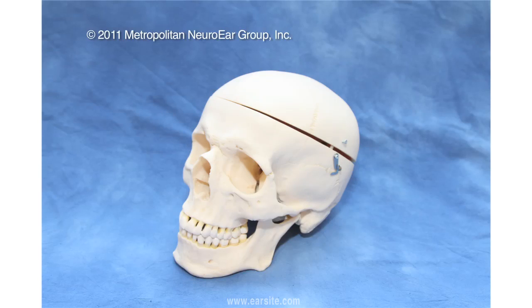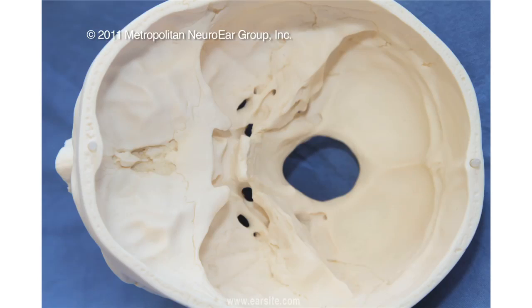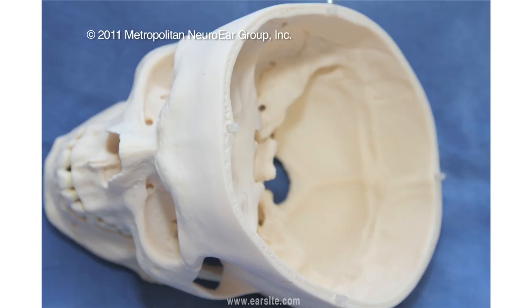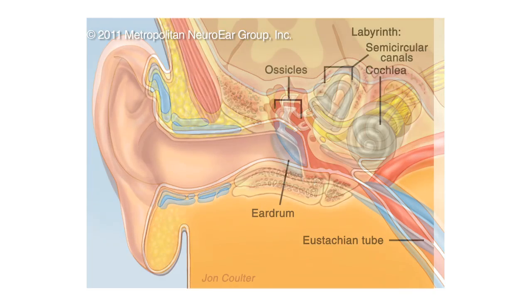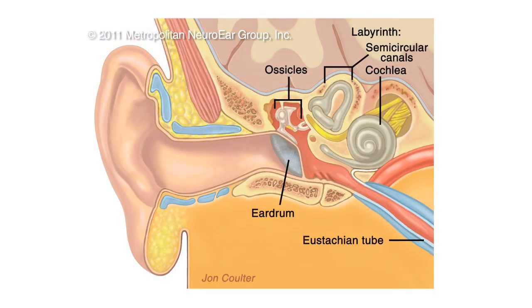you have to understand some of the anatomy of the human skull and the base of skull. Neurotology encompasses all the different conditions that affect the temporal bone, and the temporal bone is a segment of the base of the skull that houses the inner ear, the middle ear, and the external ear canal,